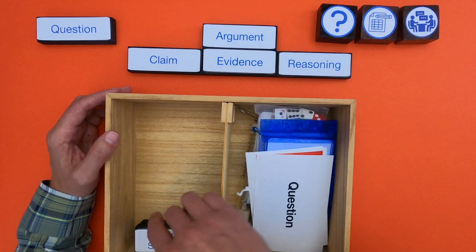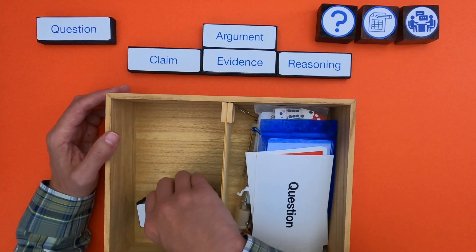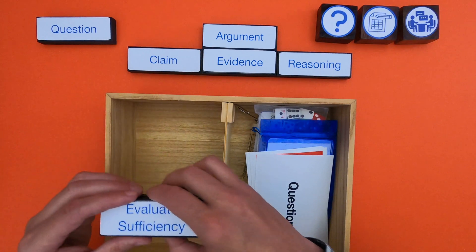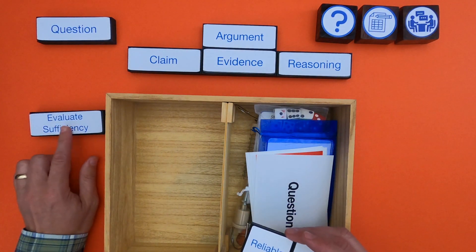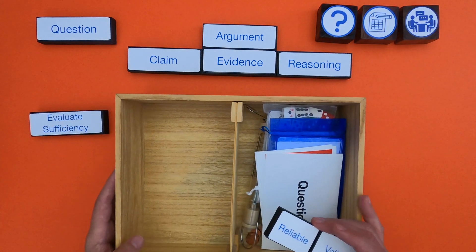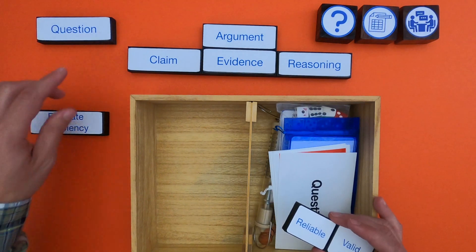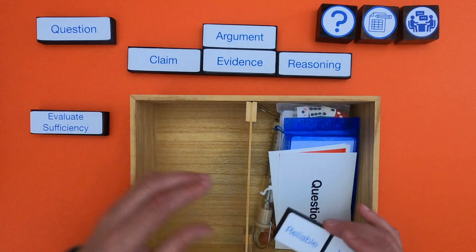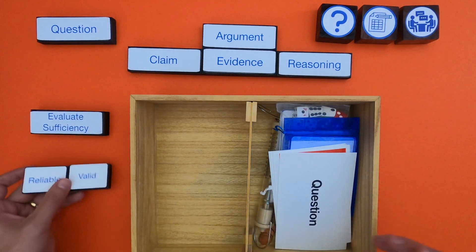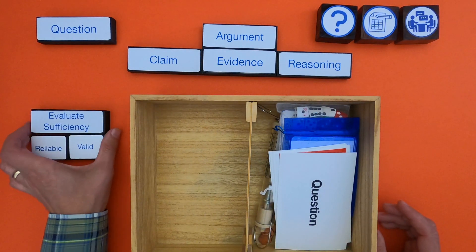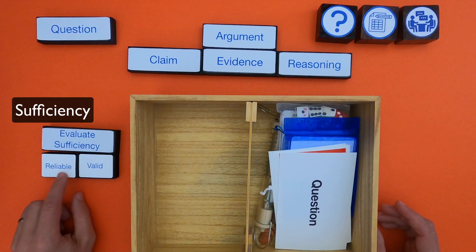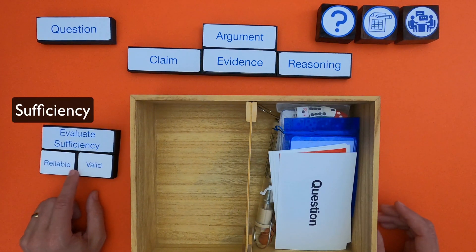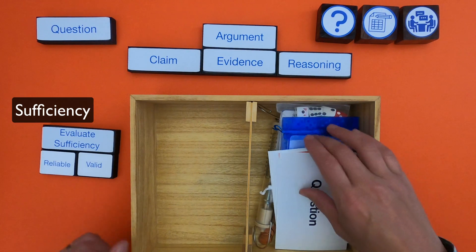A lot of the time what we want to do is evaluate the evidence, and when you're evaluating the evidence you really want to be looking for the sufficiency of the evidence — do we have enough that we could actually make a claim? The two components of sufficiency are: number one, is the data or evidence reliable, and then is it valid?